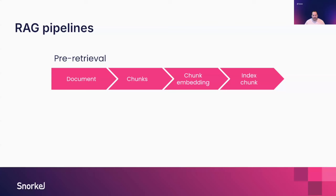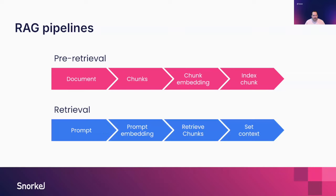How do we do it? There are two phases. The first is pre-retrieval: we have a document, we need to break it into smaller chunks, create an embedding for each chunk, pair the chunk with that embedding, and index it into a vector store. Then there's the actual retrieval step: we receive the prompt, generate an embedding from that prompt, use it to retrieve relevant chunks, set the context, and pass it on to the LLM.